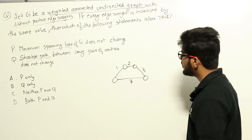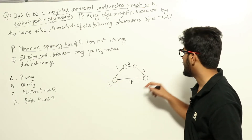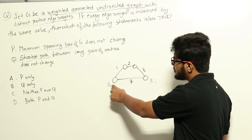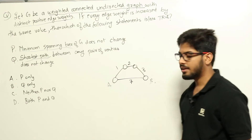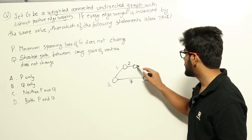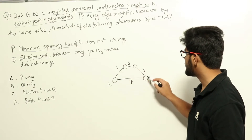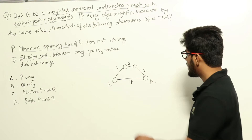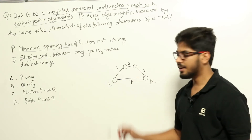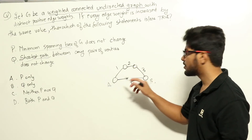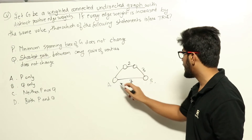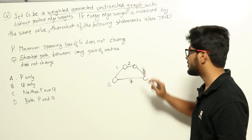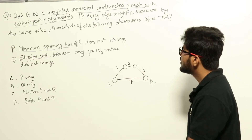Consider this as node A and this as node B. What is the shortest path between A and B? There are two paths. I can either take this path or this path. The weight of this path is 3 plus 2 plus 1, which is 6, and the weight of this path is 7. Clearly, 6 is shorter than 7, so the shortest path between A and B is currently the path from A through the intermediate nodes, having a weight of 6.